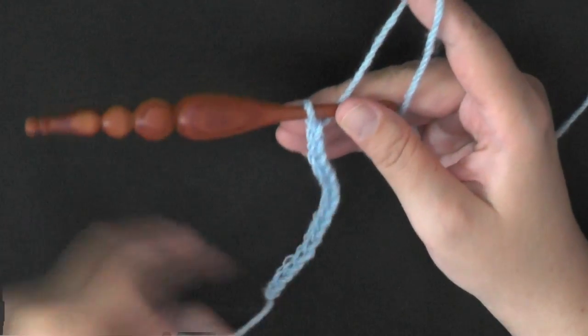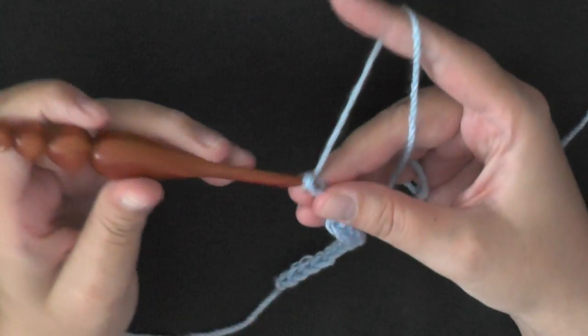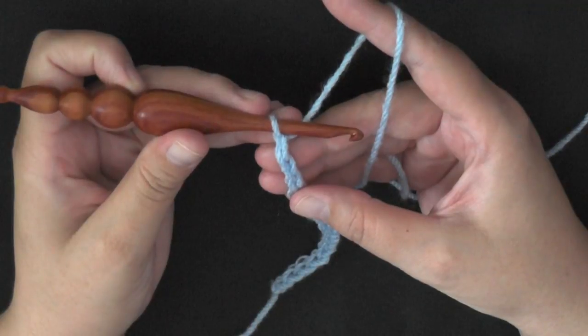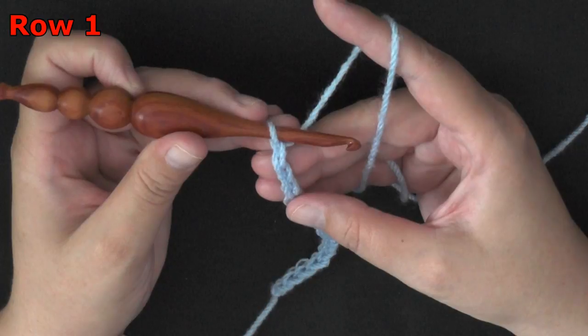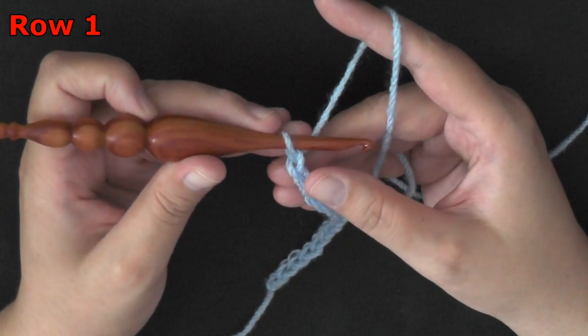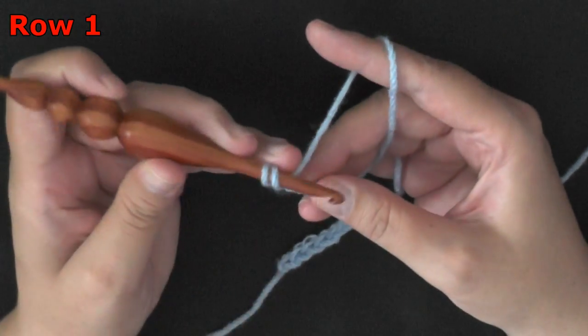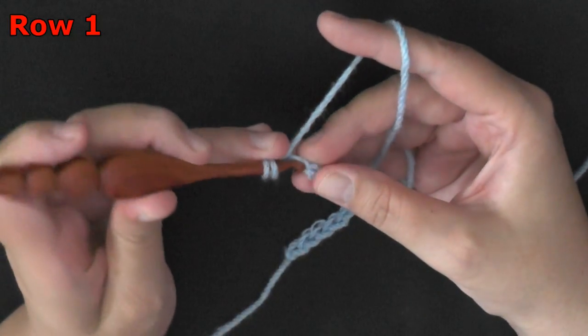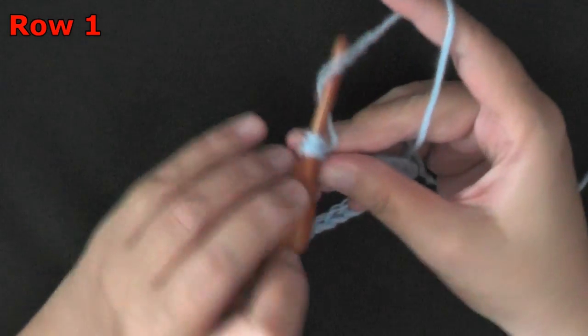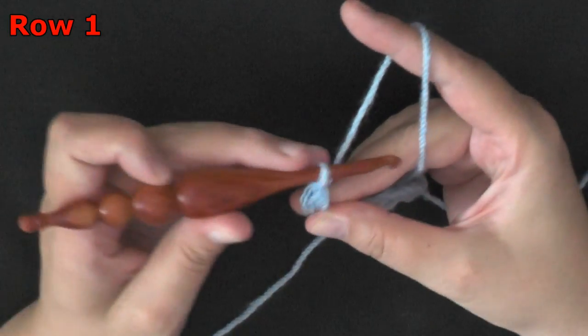I've got my multiples of 2, so I want to chain one more, and I'm ready to start row 1. For row 1 you want a half double crochet in the second chain from the hook. So 1, 2, and the second chain here, to do a half double crochet you'll yarn over, go into the stitch, pull up a loop, and then you'll pull through all three loops.